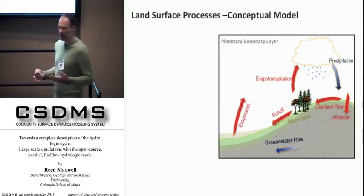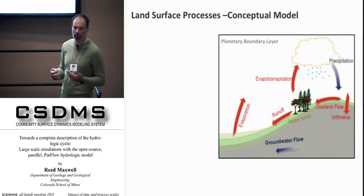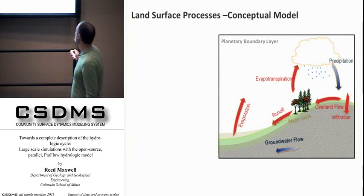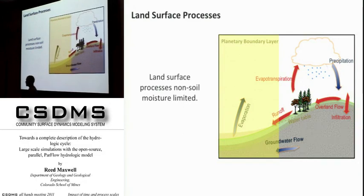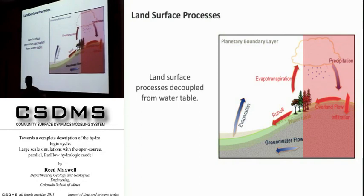The conceptual model is that we should see specific interactions in very particular ways. On the hill slope, we think about the water table and overland flow. In terms of groundwater's impact on the land energy budget: in riparian or river convergent zones where groundwater is very shallow, land surface processes are not soil moisture limited because groundwater is always close to the land surface. At the top of the hill slope, the water table depth is so deep that land surface processes are decoupled from groundwater.